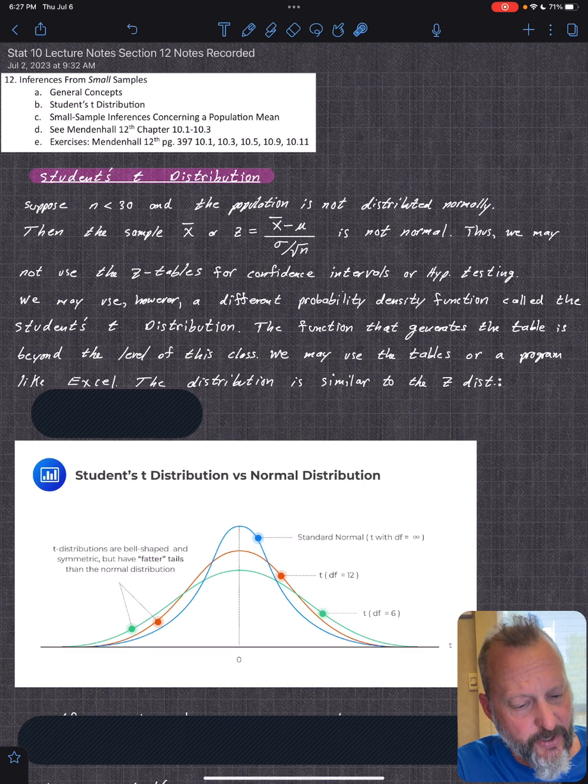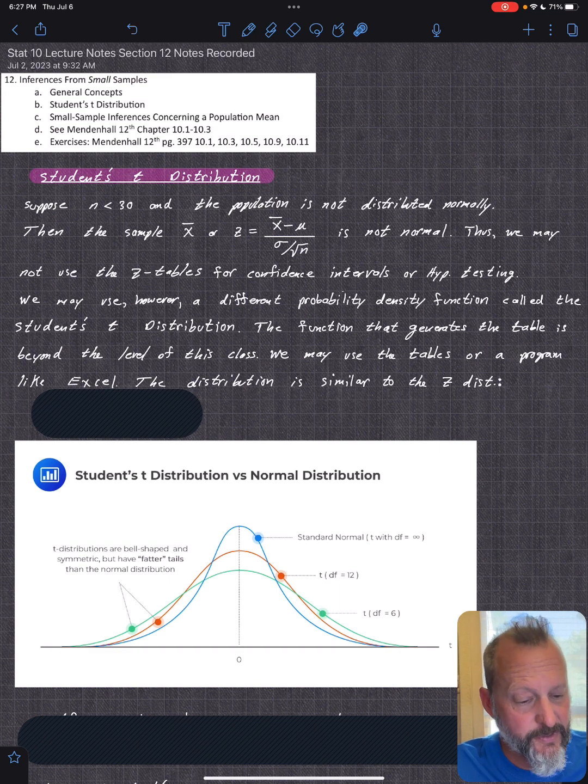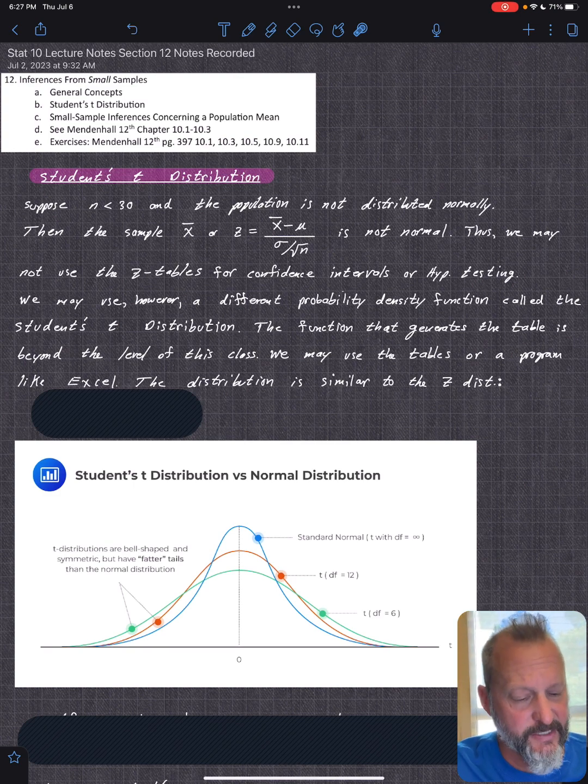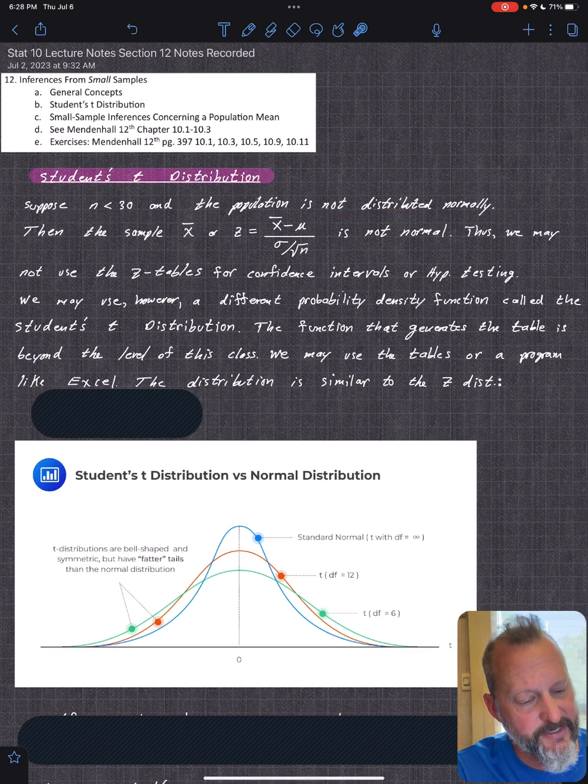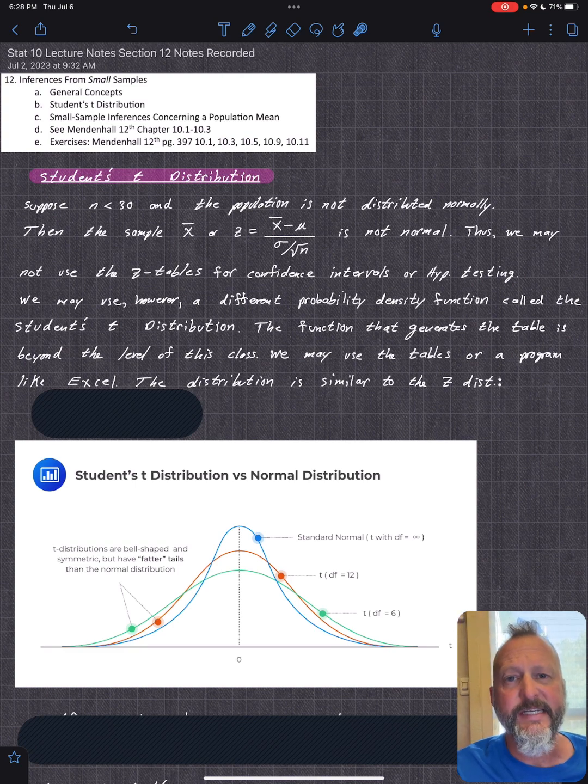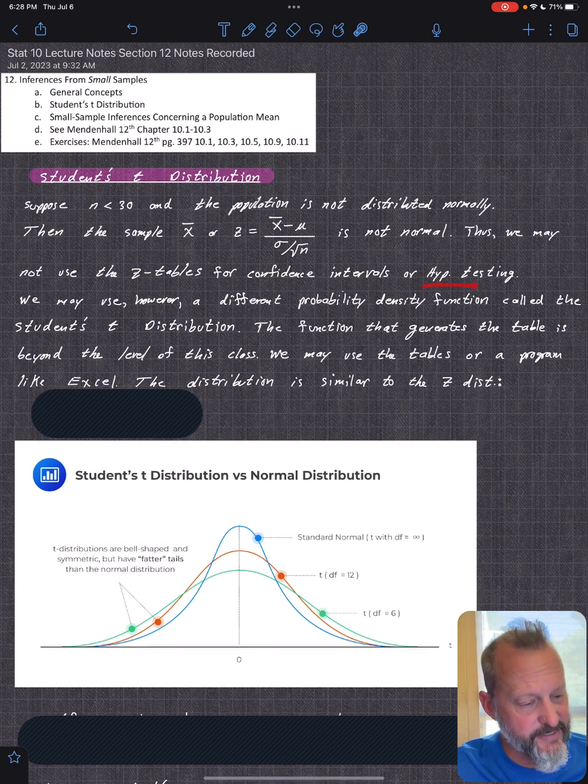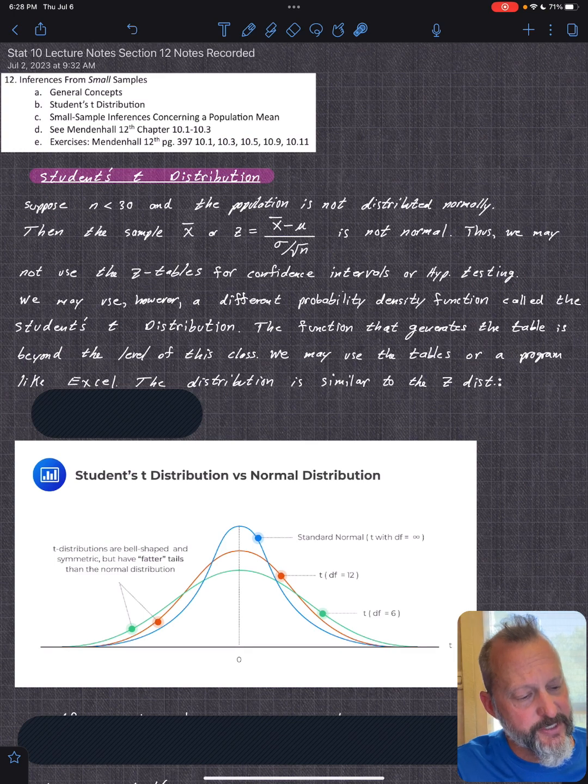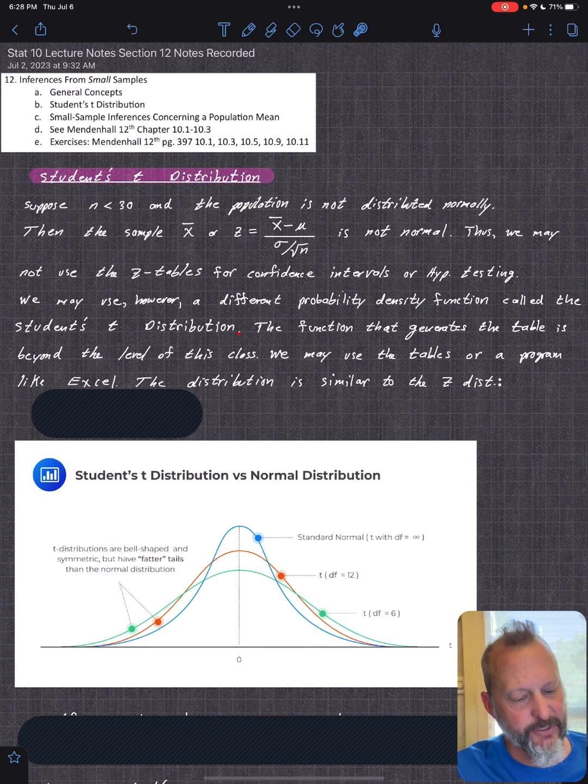So suppose you have a sample size less than 30 and the population is not distributed normally. Then this test statistic is not normal. It's not normally distributed. So in that case the z tables wouldn't work.